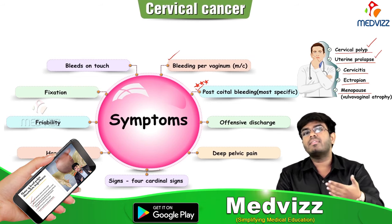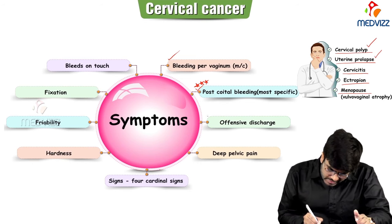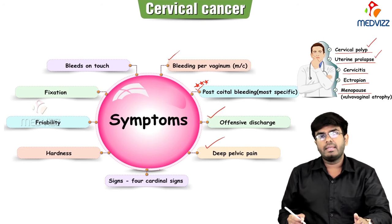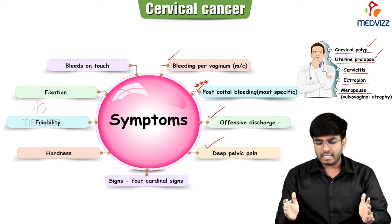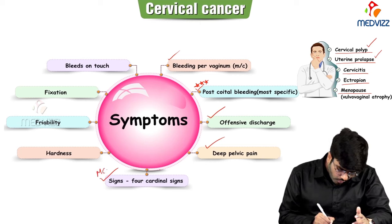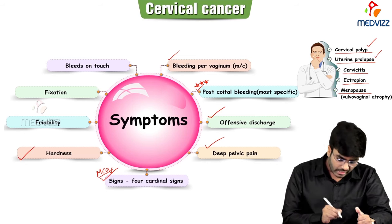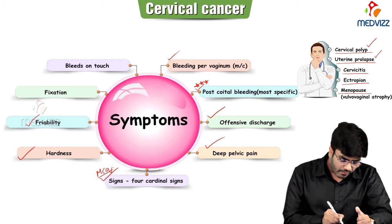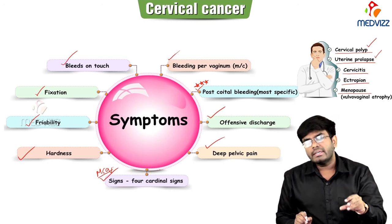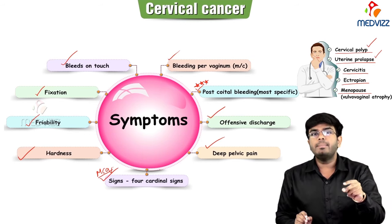To summarize: the most common symptom is irregular vaginal bleeding, and the most specific is post-coital bleeding. Additionally, there can be offensive vaginal discharge and deep pelvic pain. Once the disease is established, there are four cardinal signs which is an important MCQ: hardness, friability, fixation, and bleeds on touch.